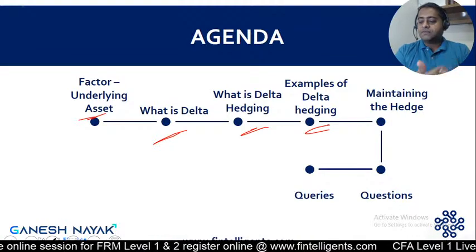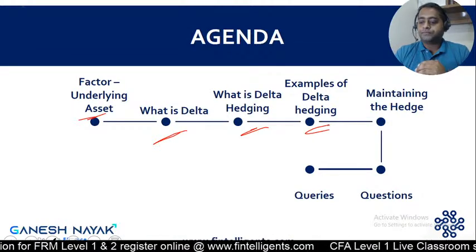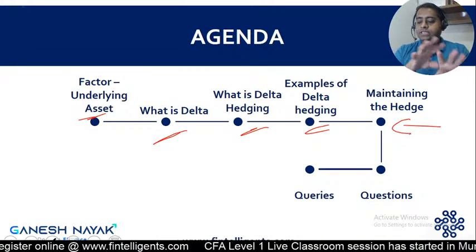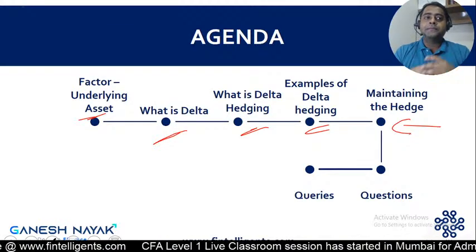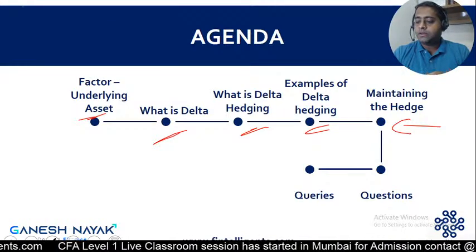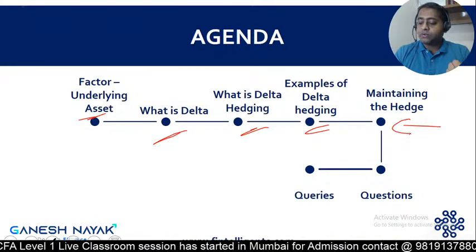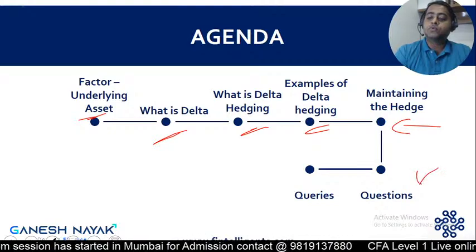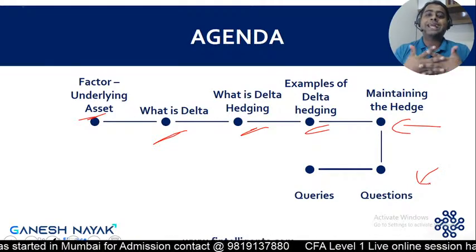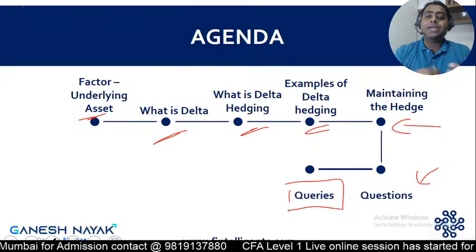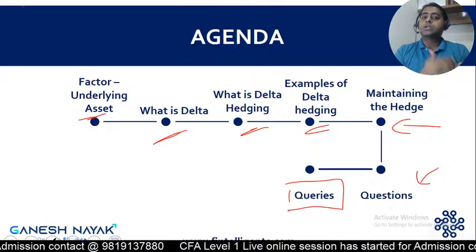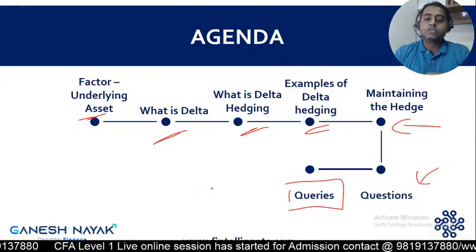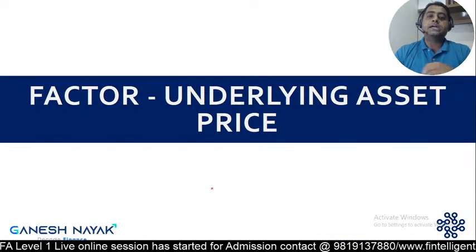Then the main concept starts with Delta hedging - what is the intention when we look at Delta hedging and how we actually do it. After covering basic Delta hedging, we'll talk about maintaining the Delta hedge. This is where the exam question can come - they will assess your ability to understand, if the Delta is changing, how exactly you're supposed to change your position. Finally we'll do two questions.